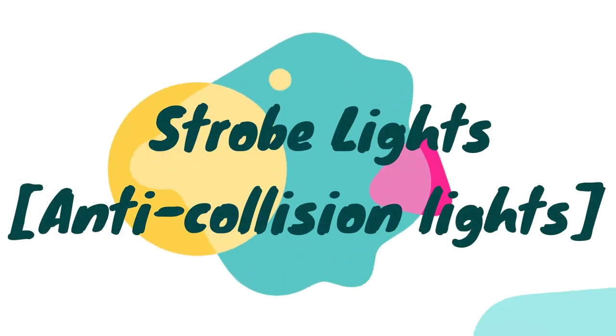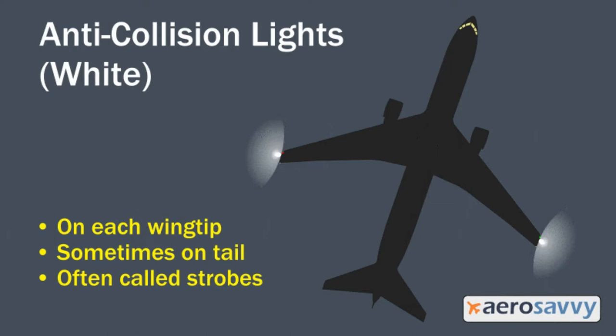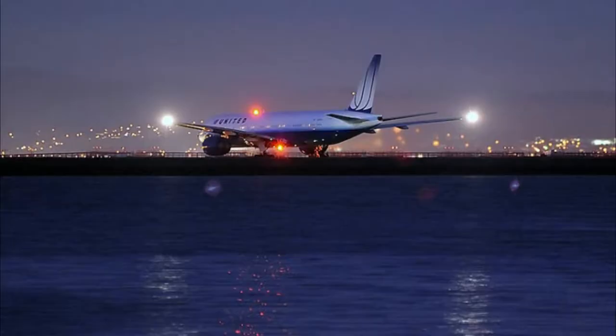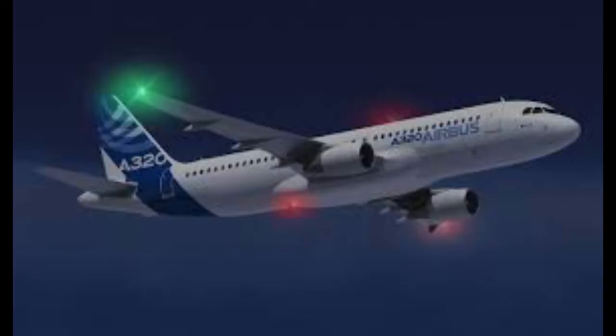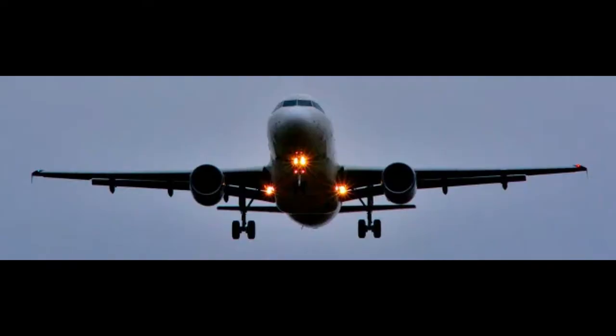Strobe lights: when installed, strobe lights are usually positioned near the trailing edge of the wing tips and may also be installed on the tail of the aircraft. Strobes are high intensity white lights which flash at a regular interval. They are normally turned on when entering an active runway for takeoff and turned off when leaving the runway after landing.